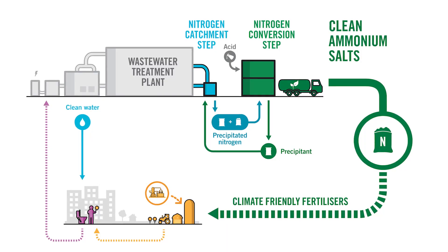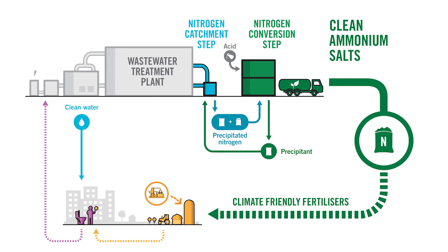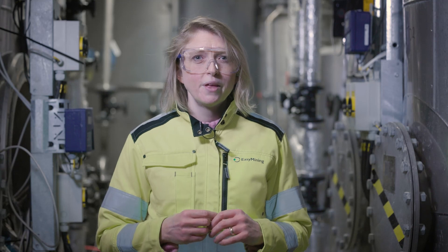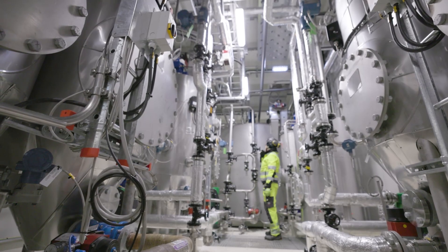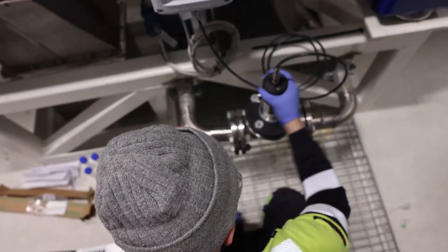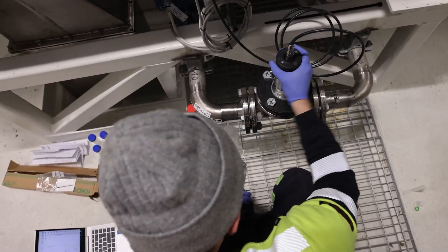In the second step sulfuric acid is added to split the nitrogen from the precipitant. We convert the nitrogen to ammonium sulfate. At the same time the precipitant magnesium phosphate is regenerated. The precipitant is separated from the ammonium sulfate and sent back to the first step in the process again, making it resource efficient.